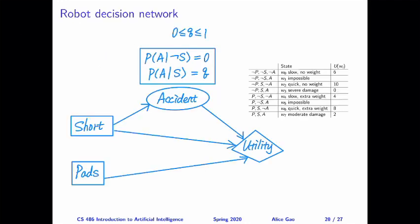This is a reminder of what the robot decision network looks like. We have four nodes: two of them are decision nodes representing our actions. Then there's accident, which is a random variable that depends on whether we take the short route or the long route. All three variables collectively influence the robot's utility.